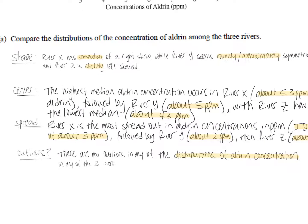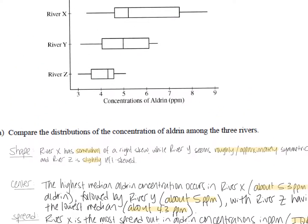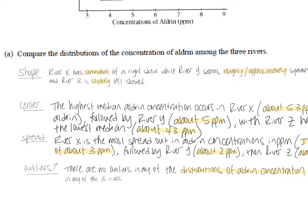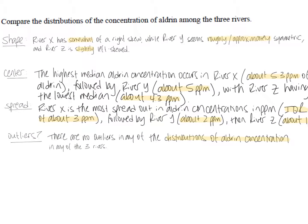Alright, and then last but not least, the easiest thing to tell from looking at these three box plots up here, we don't have any asterisks. So remember the asterisk or the little star, that's what indicates that we have an outlier, and we have none of those up here, so I just wrote there are no outliers in any of the distributions of Aldrin concentration in any of the three rivers.